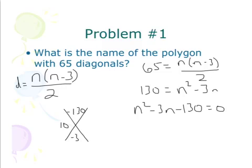Well, I know that 10 and 13 multiply to 130, and if I want to get negative 3 when I add, I'm going to put that negative in front of the 13. So I'm going to have n plus 10 and n minus 13, that equals 0.